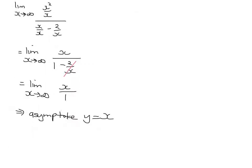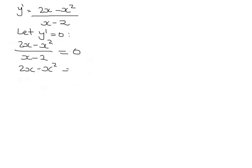So that's our first derivative. And we need to let y dash equal 0 to find the stationary points. So 2x minus x squared over x minus 2 equals 0. If I times both sides by the denominator, it's 2x minus x squared equals 0. x outside of 2 minus x equals 0. So either x equals 0 or x equals 2.